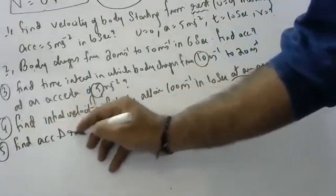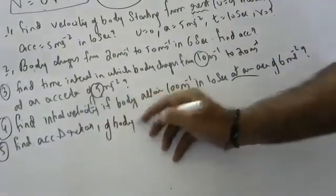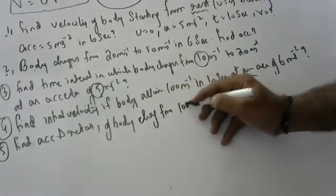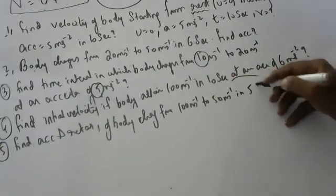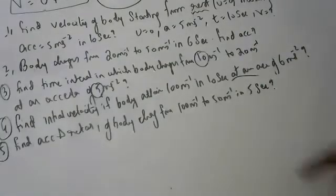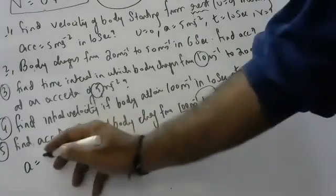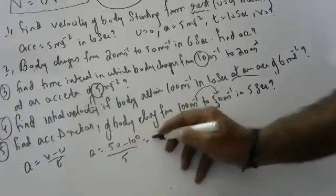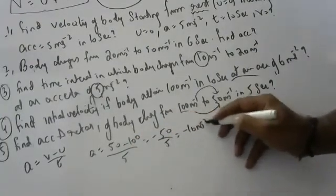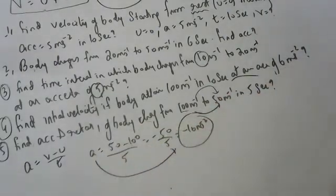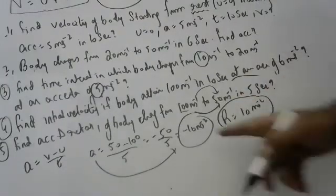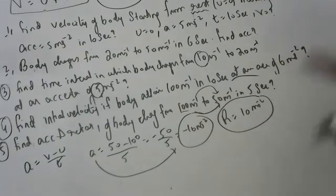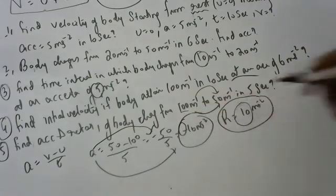Find the acceleration and retardation of a body changing from 100 meters per second to 50 meters per second in 5 seconds. Acceleration equals V minus U divided by T: 50 minus 100 divided by 5 equals minus 10 meters per second squared. Since it is negative, the acceleration is minus 10, so retardation is 10 meters per second squared.